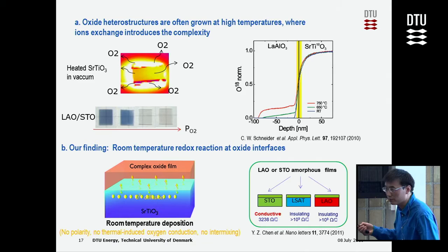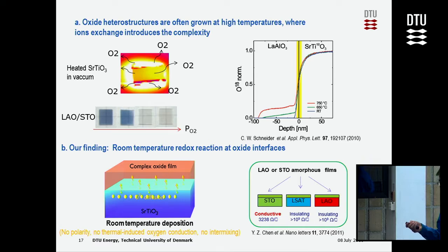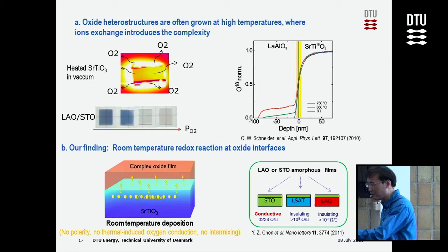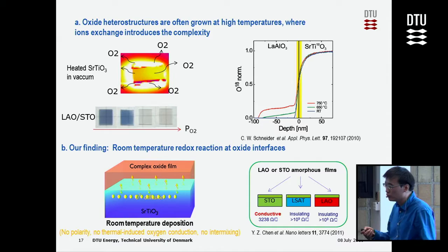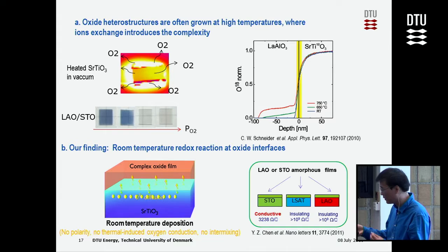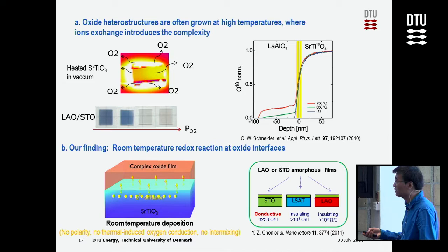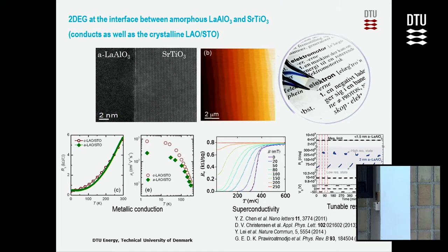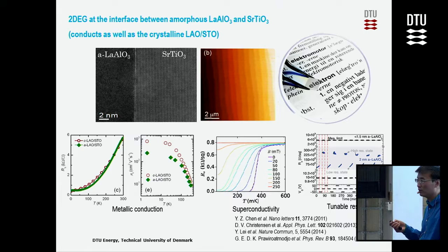Therefore we chose room temperature deposition. Room temperature deposition is quite simple: you put the sample into the chamber and deposit. The important thing is it rules out all the possibilities discussed before — when you grow at room temperature the film is amorphous, so you have no polarity, no thermally-induced oxygen loss, and no intermixing. But we still found the interface to be conducting, which is very intriguing.